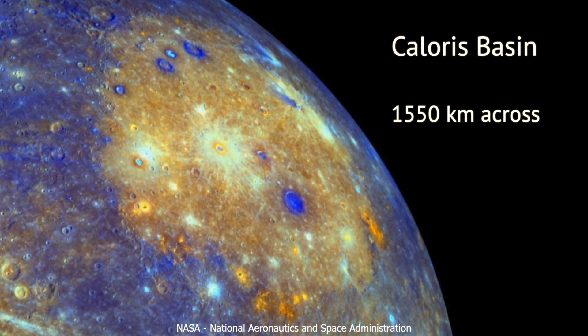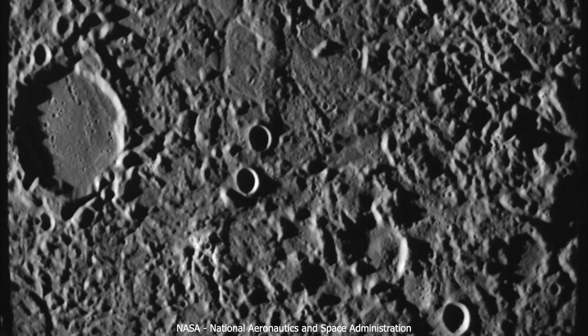1,550 kilometers across, surrounded by 2 kilometer high mountains, and absolutely filled with lava. The impact that created this structure was so big it shattered rocks on the other side of the globe. If this were to happen on Earth, it would probably mean the end of all life.